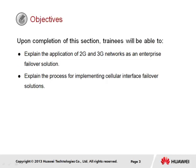Upon completion of this section, it is expected that trainees will be able to explain the application of 2G and 3G networks as an enterprise failover solution, as well as explain the process for implementing cellular interface failover solutions.